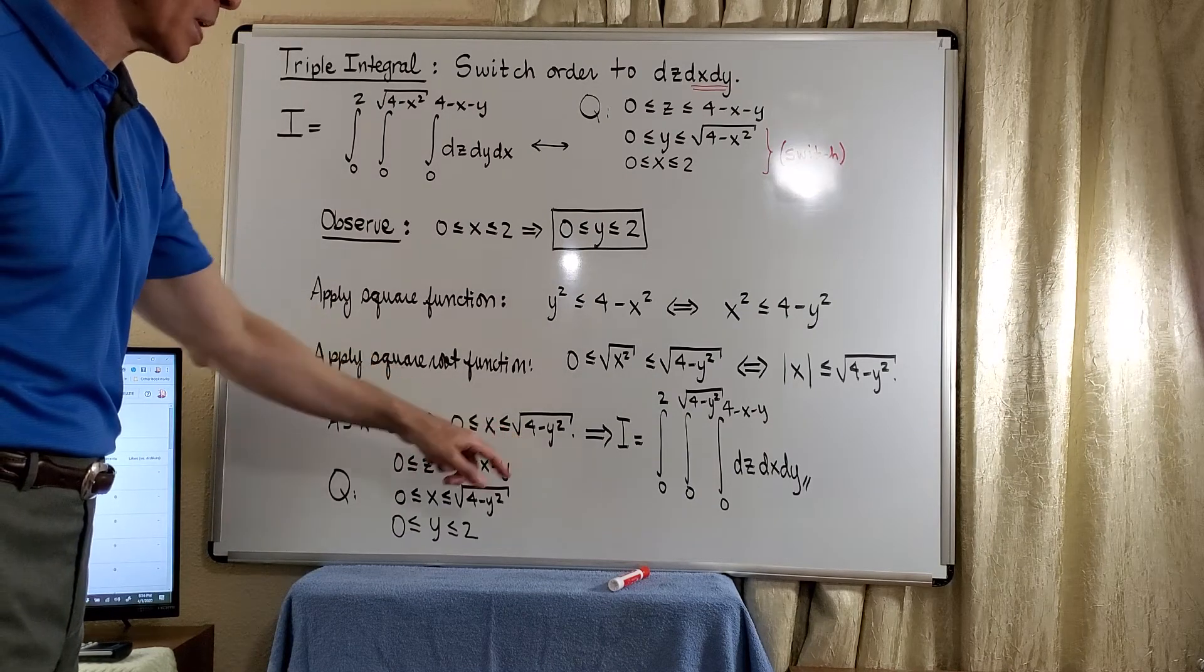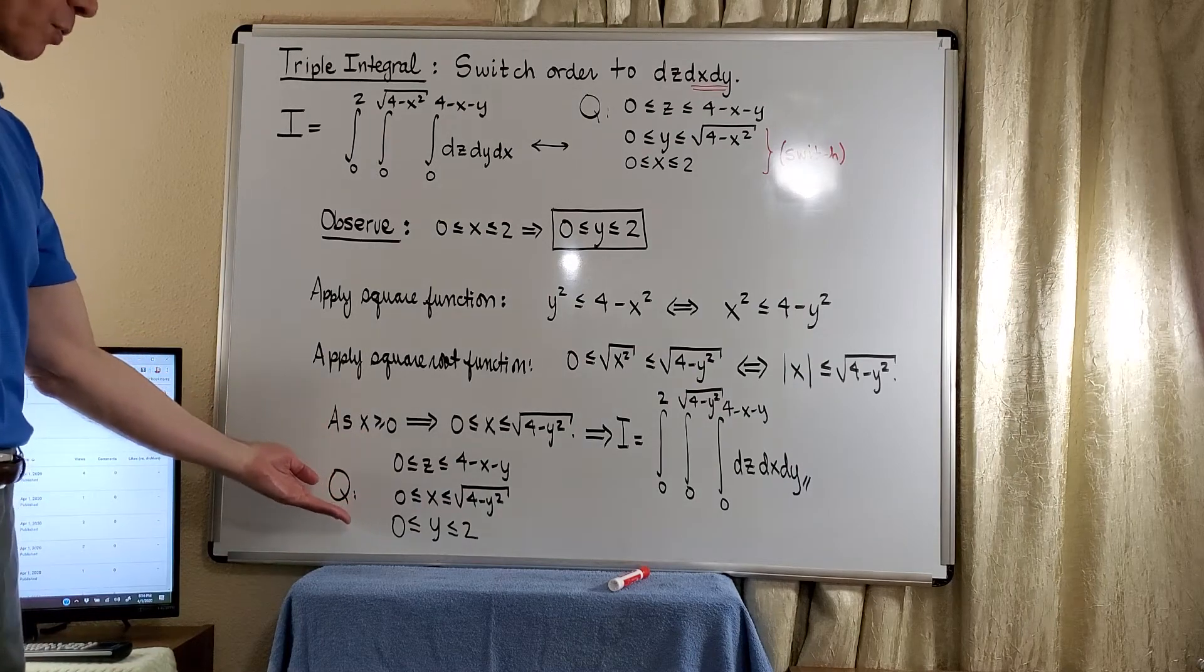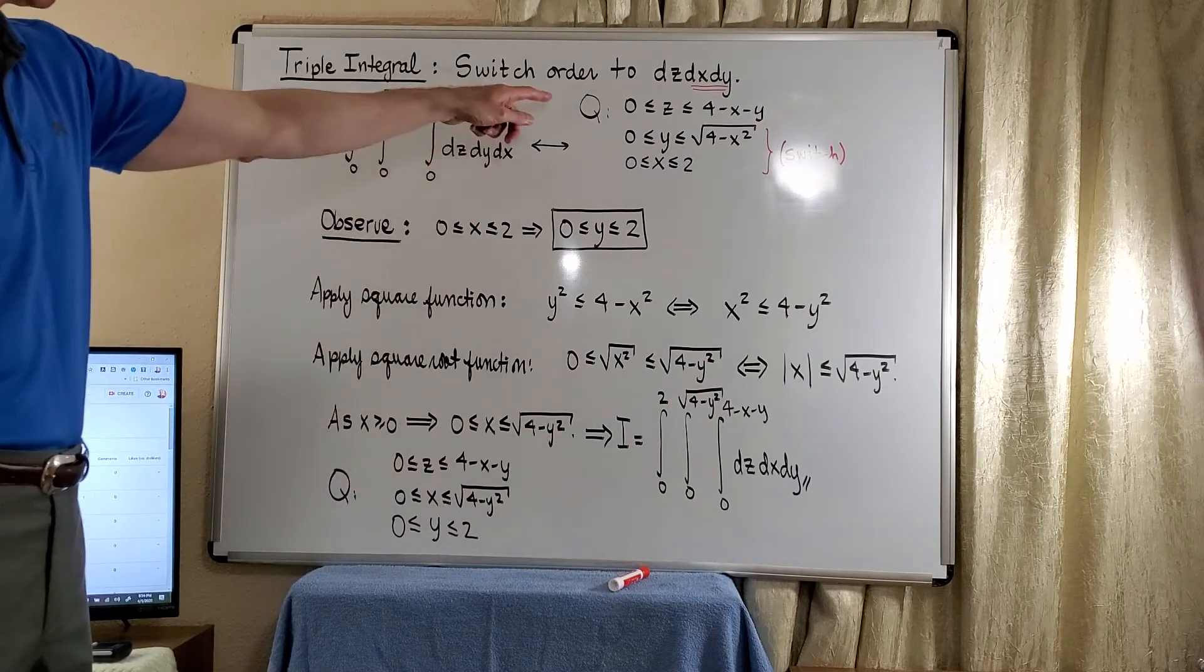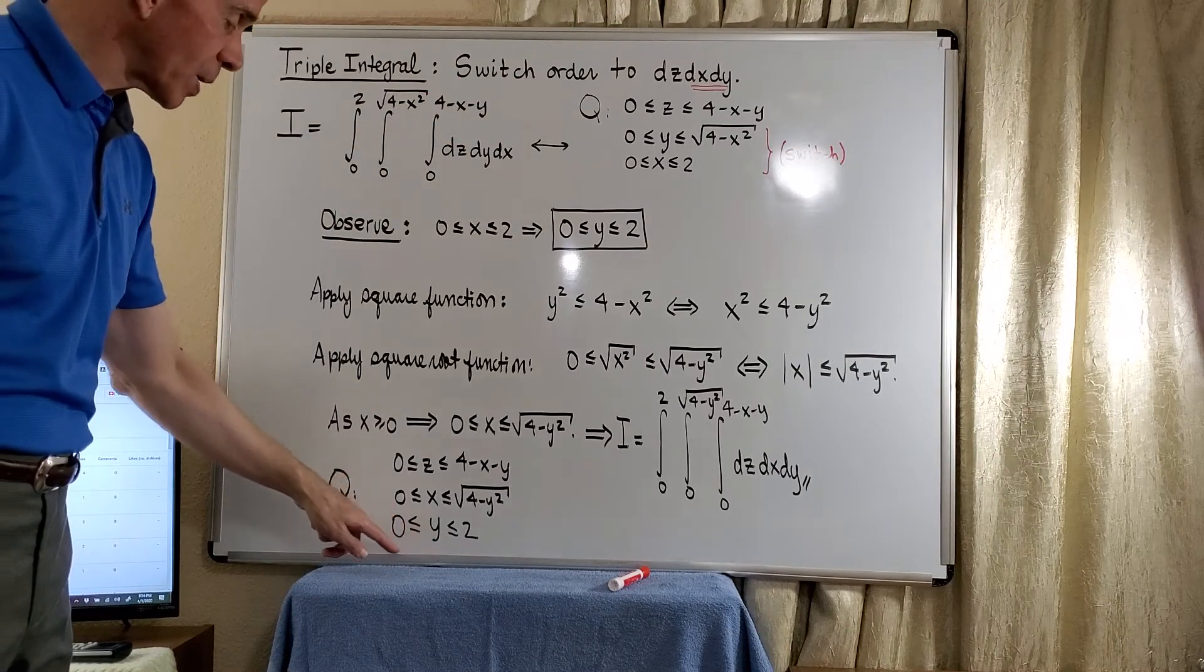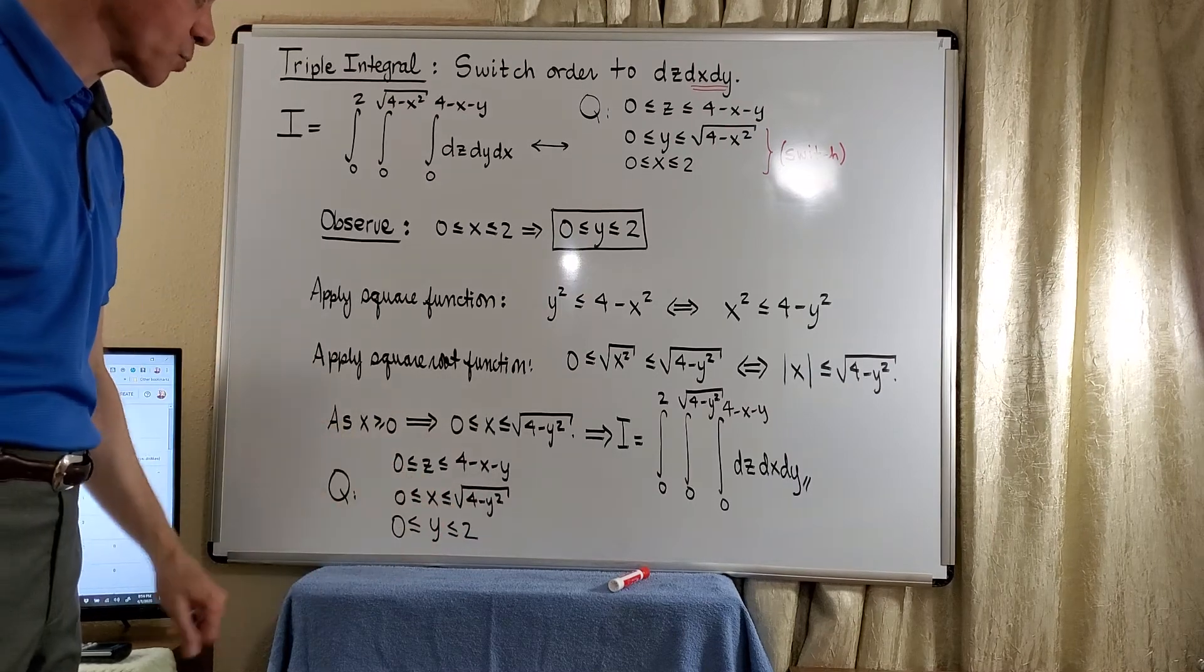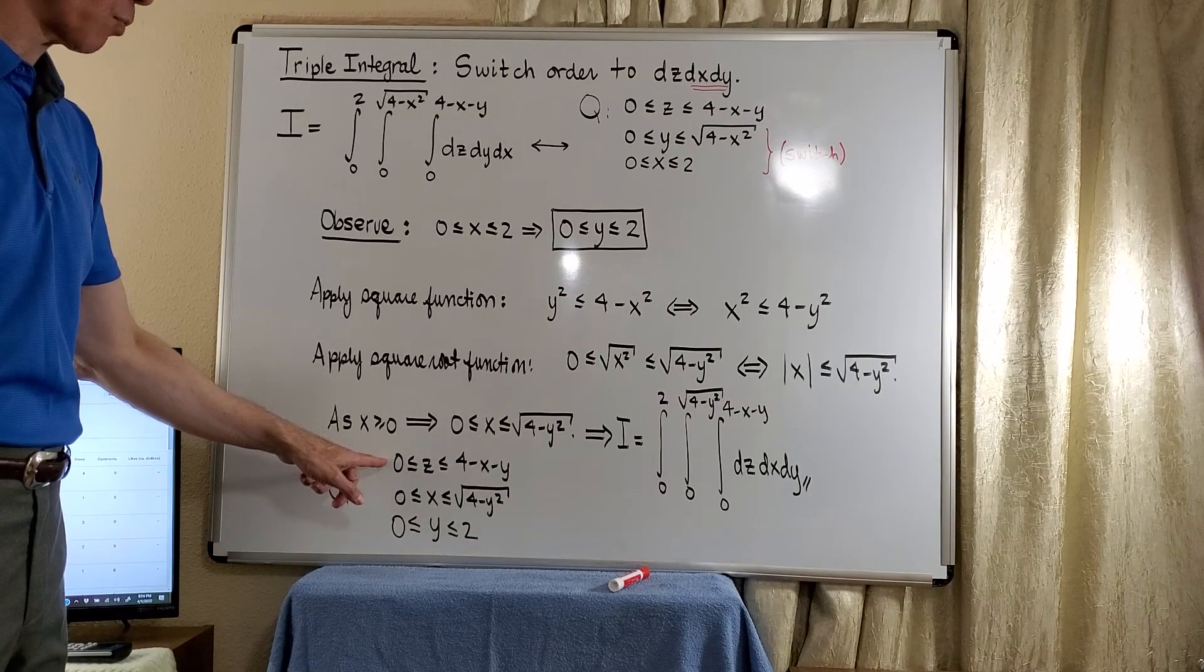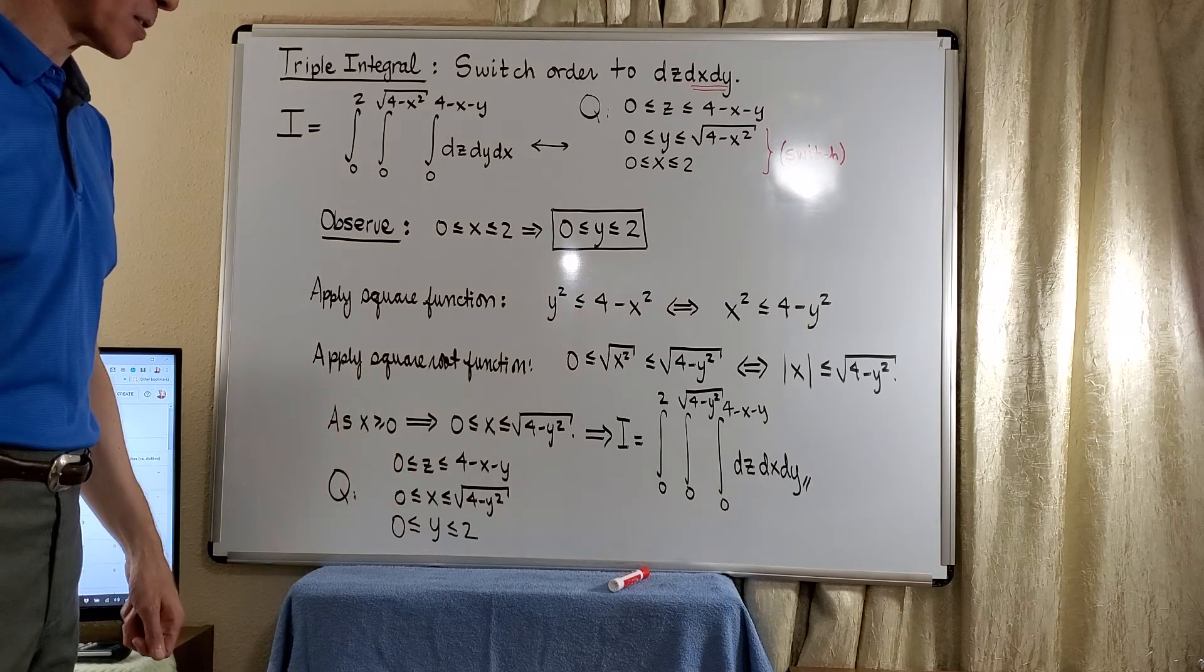And then, of course, we have a right bound of the square root of 4 minus y squared. So, now, our new representation, and I just called this a solid cube, is now y running from 0 to 2, x running from 0 to the square root of 4 minus y squared. And of course, z the same as it was initially, from 0 to 4 minus x minus y.